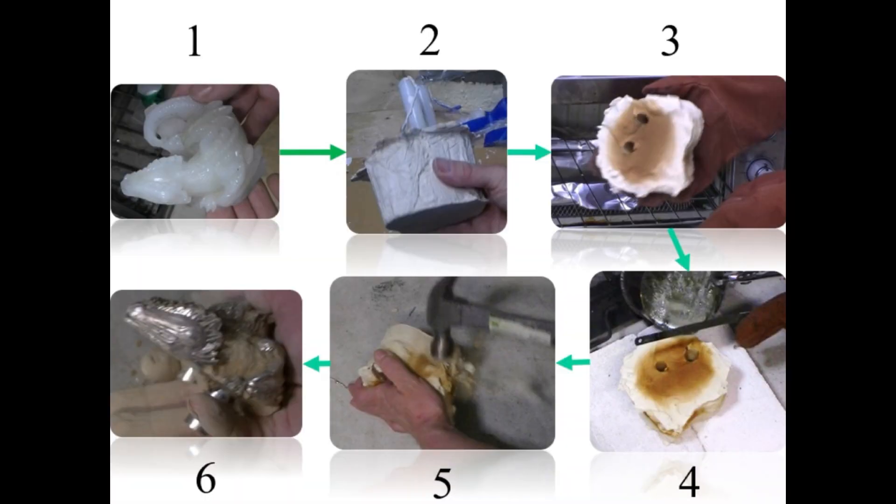Another type of casting process is investment or lost wax casting. This has been around for some 5,000 plus years, originally used by the Egyptian, Chinese and Greek civilizations.